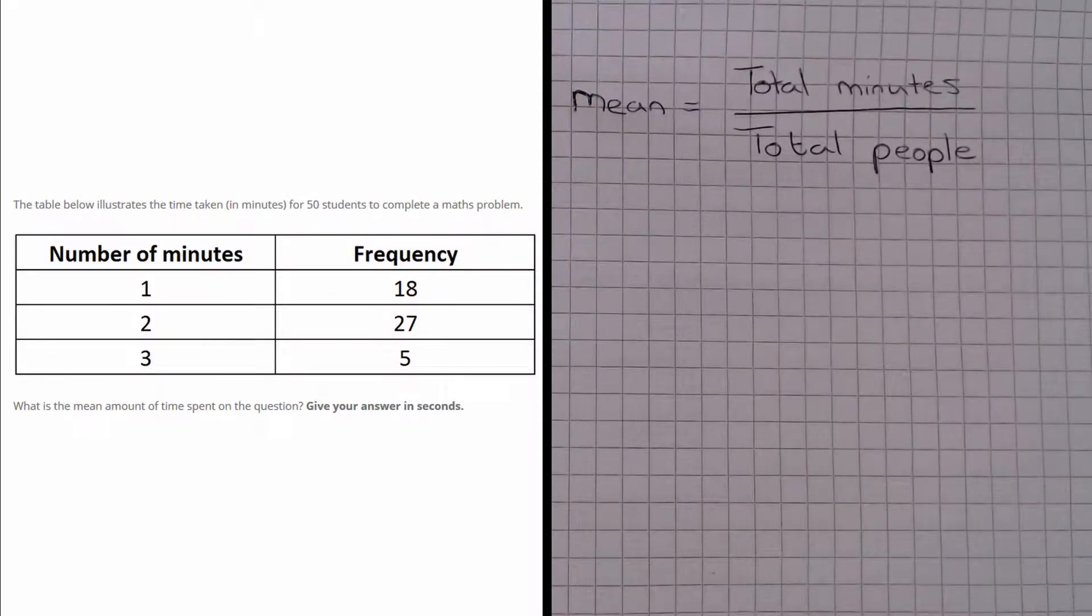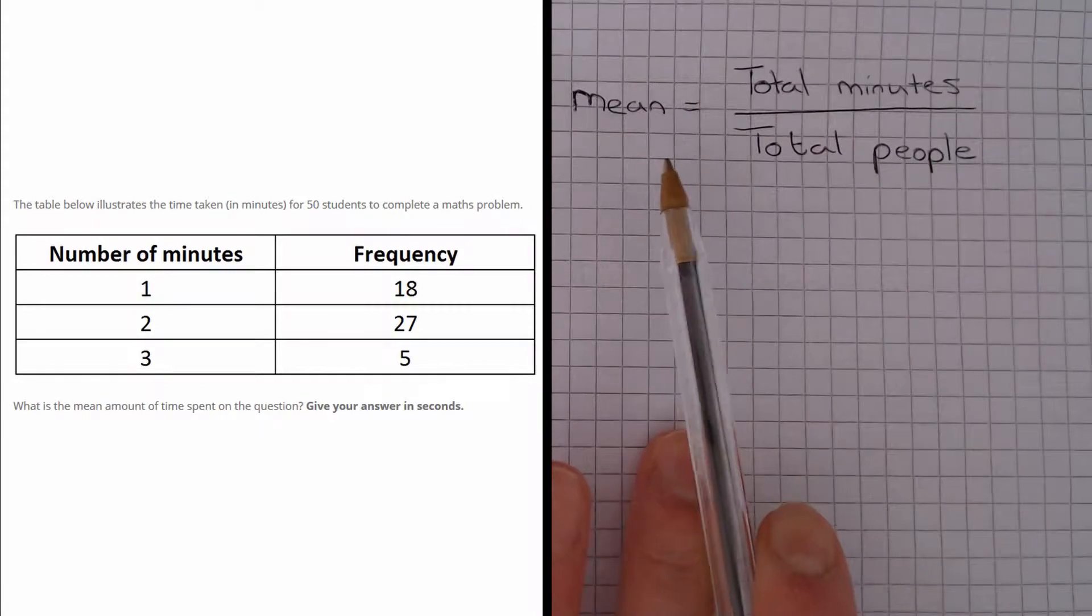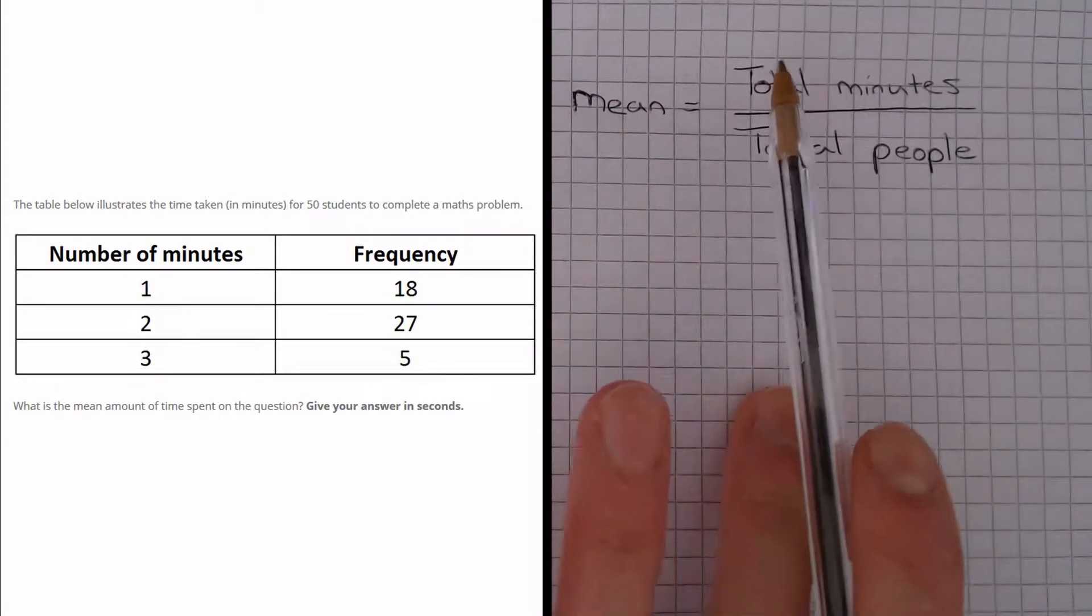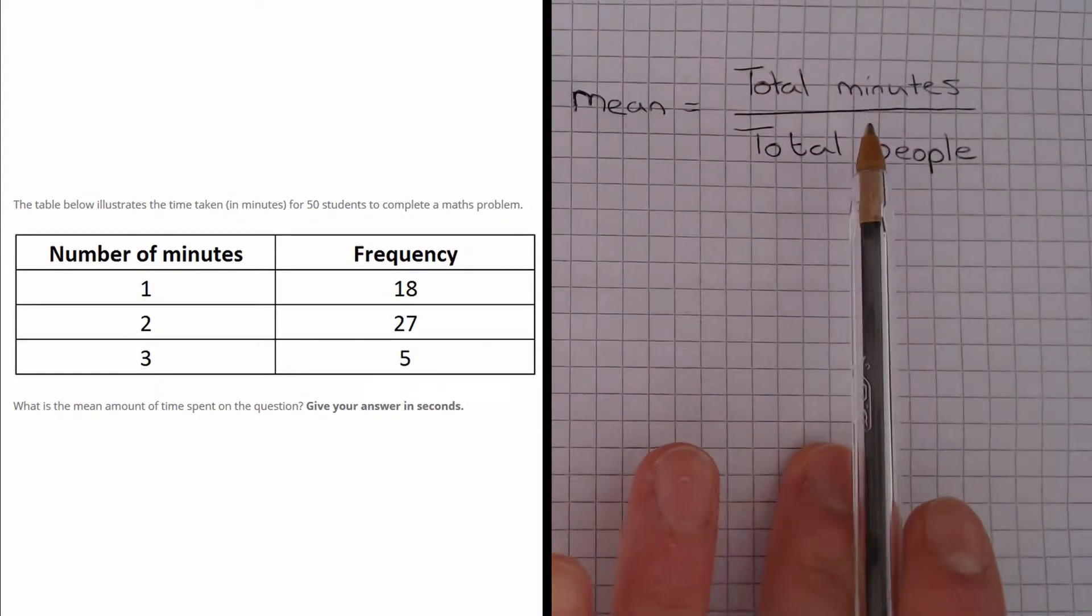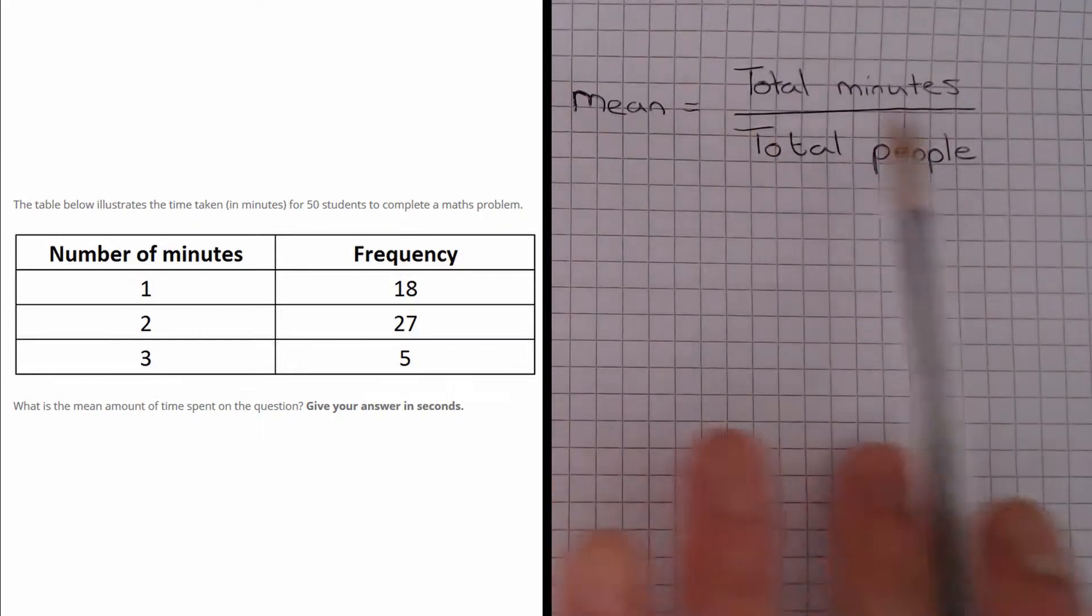In this question we are given a frequency table and we are asked to find the mean amount of time spent on the question. The mean amount of time spent on the question is the total number of minutes, the total time taken, divided by the total number of people.